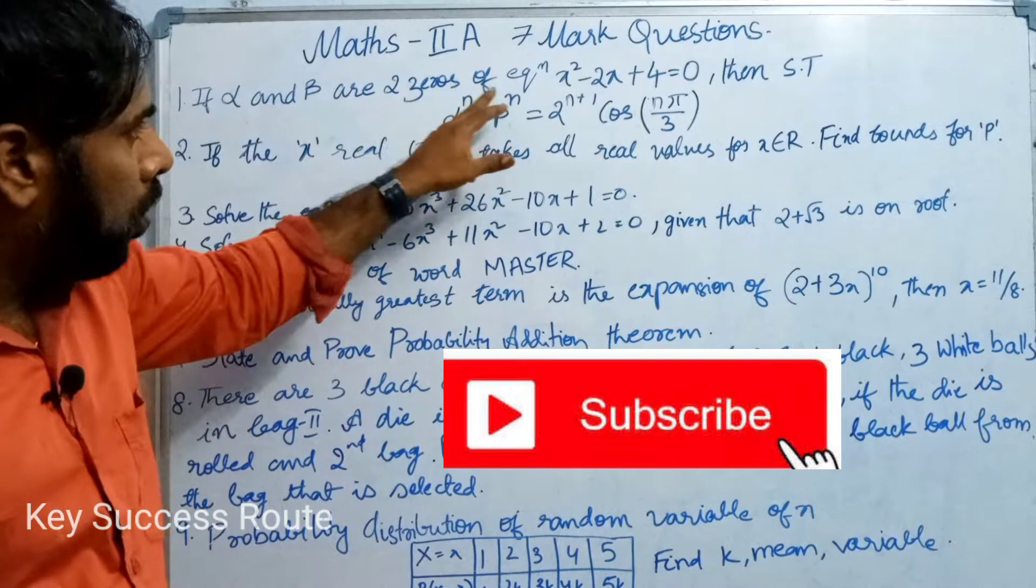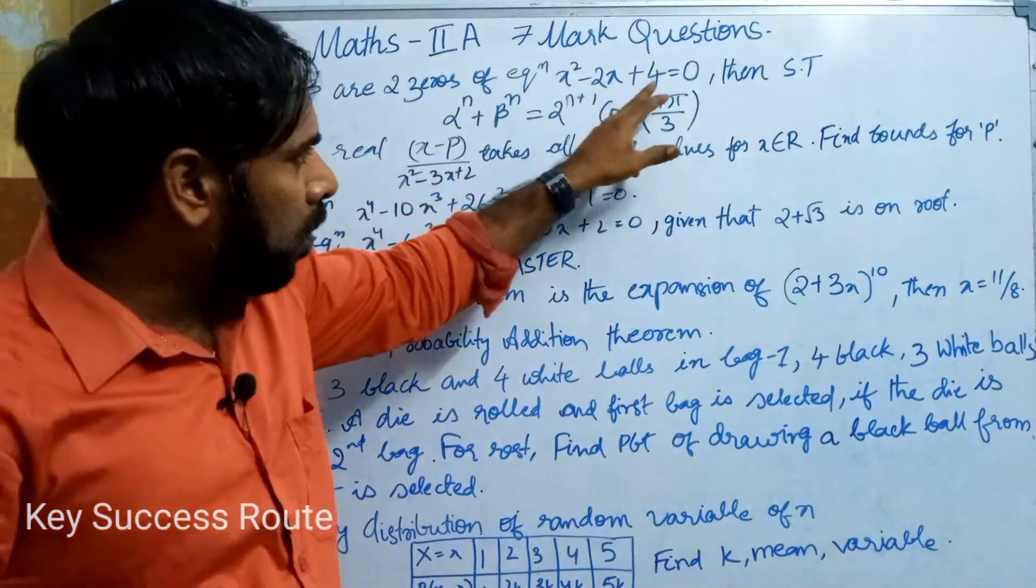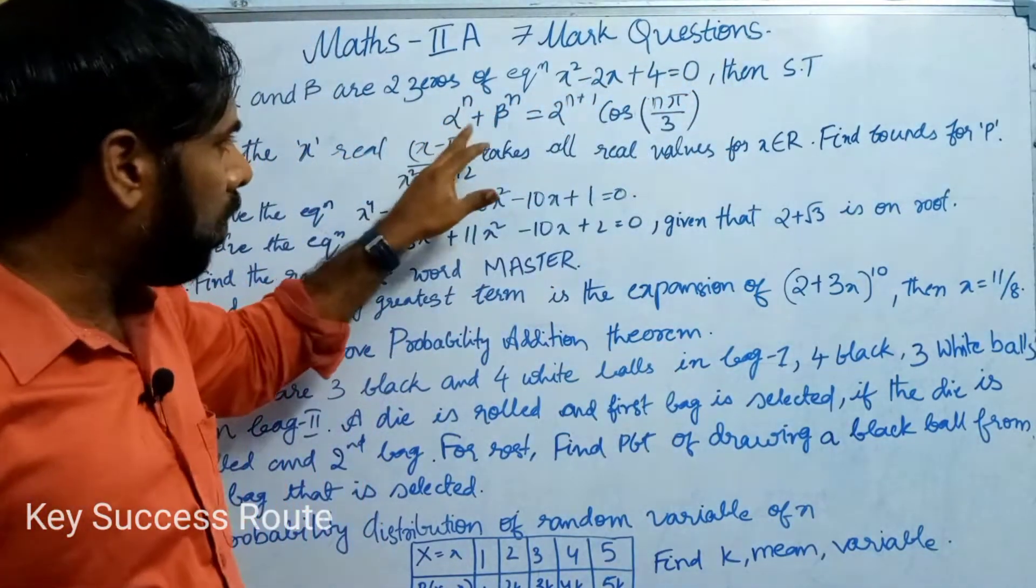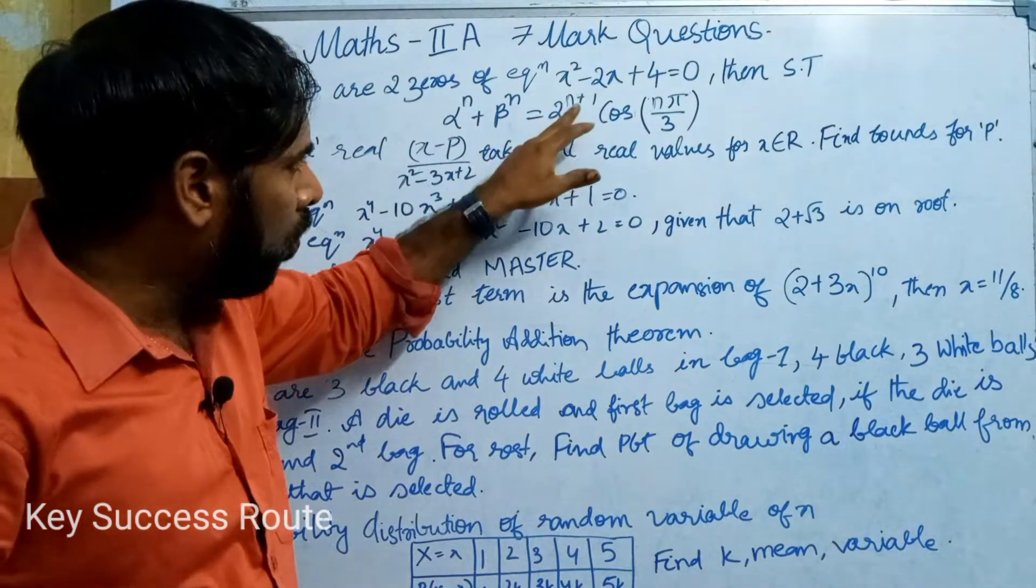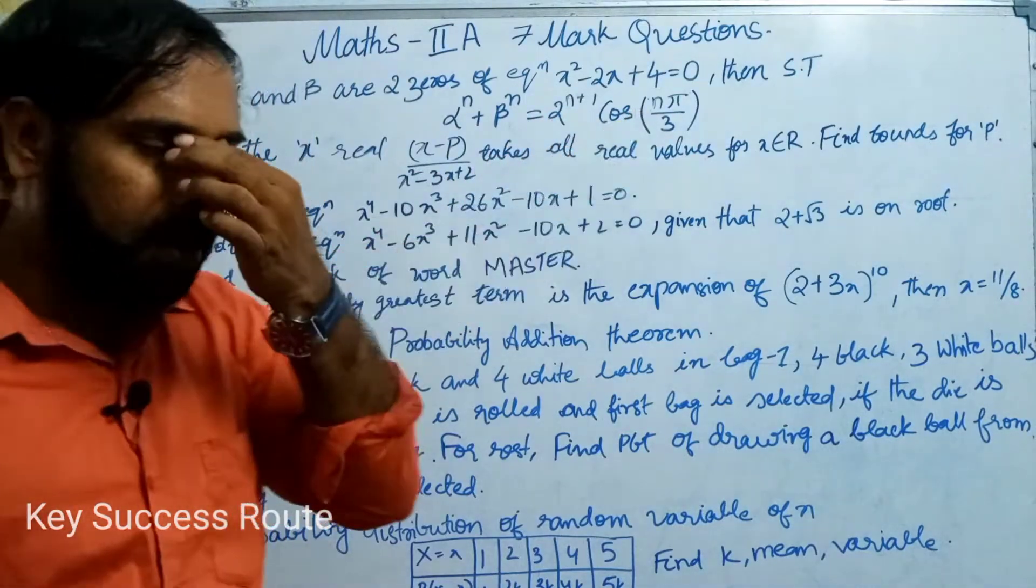If alpha and beta are two zeros of equation x square minus 2x plus 4 equal to 0, then alpha power n plus beta power n equal to 2 power n plus 1 cos n pi by 3.